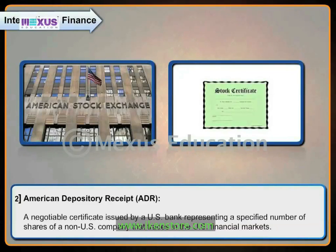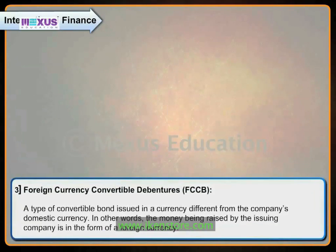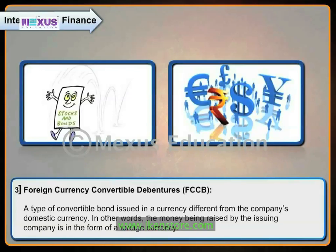American Depository Receipt or ADR: a negotiable certificate issued by a US bank representing a specified number of shares of a non-US company that trades in the US financial markets. Foreign Currency Convertible Debentures or FCCB: a type of convertible bond issued in a currency different from the company's domestic currency. In other words, the money being raised by the issuing company is in the form of a foreign currency.